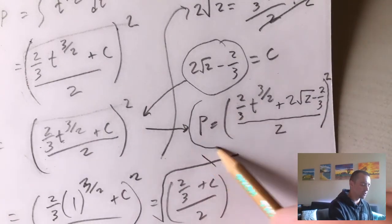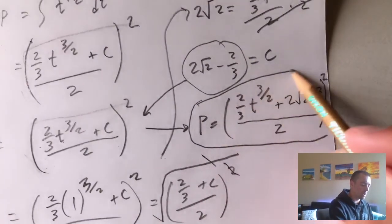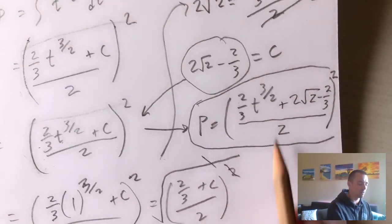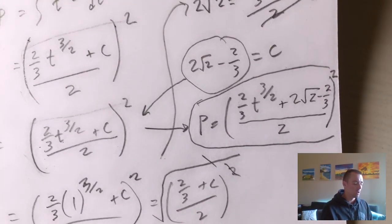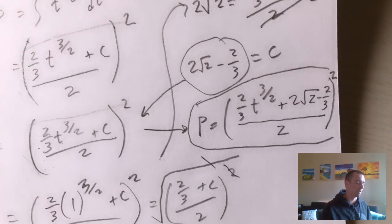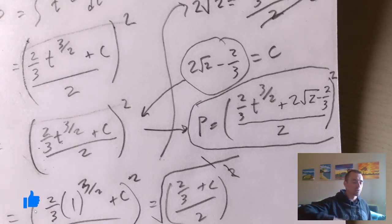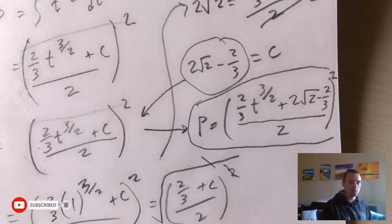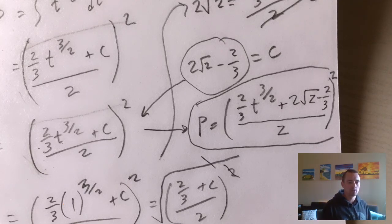Plugging C back in, the solution to our initial value problem is P equals two-thirds T to the three-halves plus 2 root 2 minus two-thirds, all over two, all squared. This could be simplified further, but this is a completely acceptable answer unless the problem specifically asks you to simplify. Be sure to hit like, subscribe, and the bell icon for notifications. Thanks and see you next time!